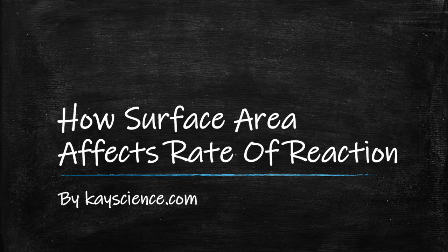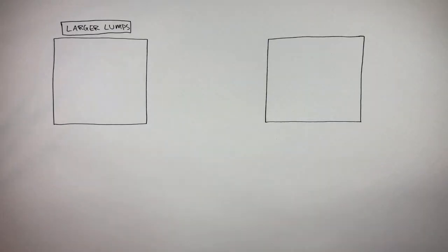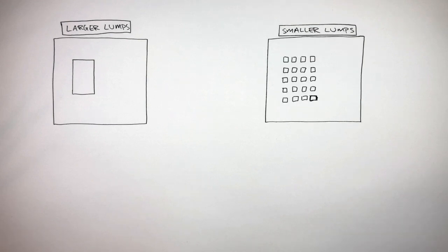How Surface Area Affects Rate of Reaction by kscience.com. Here we have two containers, where there are larger lumps on the left and smaller lumps on the right. Here's one large lump, and here are many smaller lumps with the same mass as the one large lump. The one large lump has a smaller surface area compared to the surface area of all the small lumps combined.